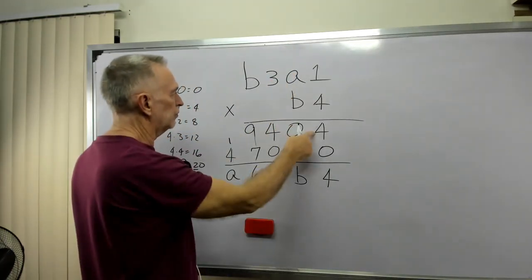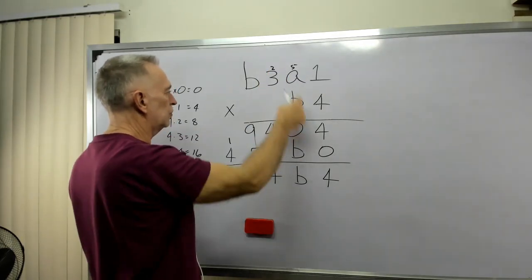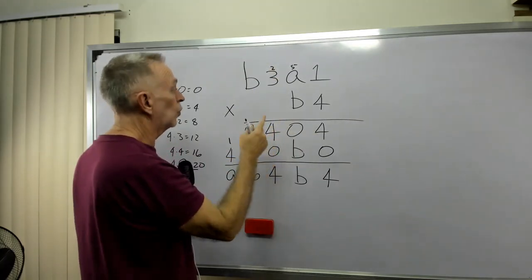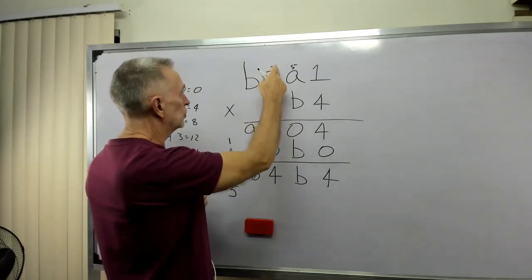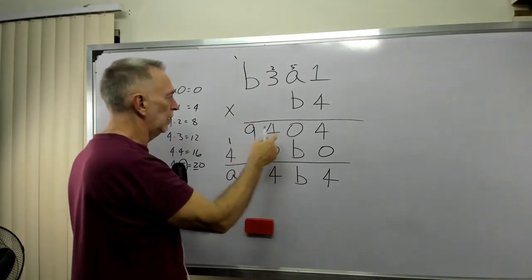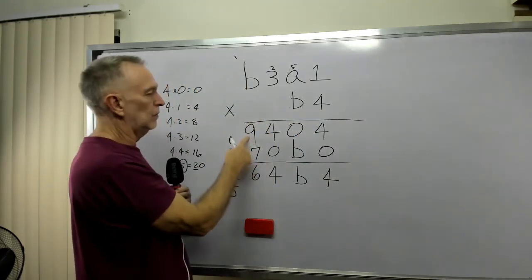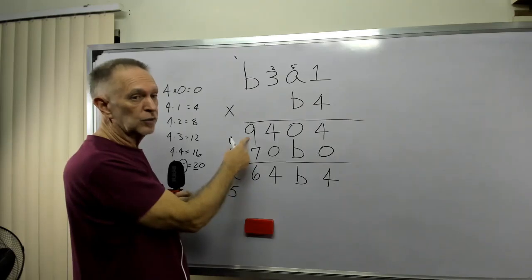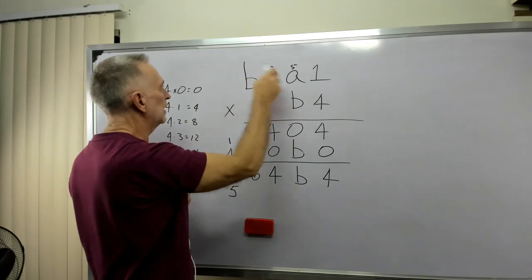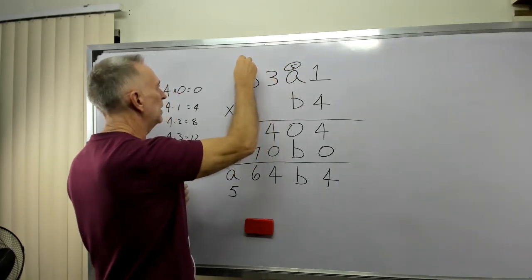4 times 1 is 4. 4 times 5 is 20. Carry the 2. 4 times 3 is 12. 12 plus 2 is 14. So I have a remainder of 1. 4 times B plus 1 is 9. 4 times 2 is 8. 8 plus 1 is 9. So it seems to be, I need to erase that reminder, that B is 2.